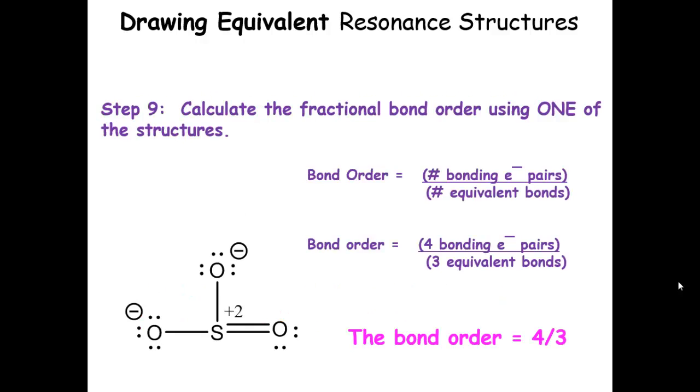Now let's calculate the fractional bond order. Count the bonding electron pairs on one of our resonance forms. We have four bonding electron pairs divided by three equivalent bonds. The bond order is four-thirds or one and a third. An electron pair is delocalized over all of these bonds.